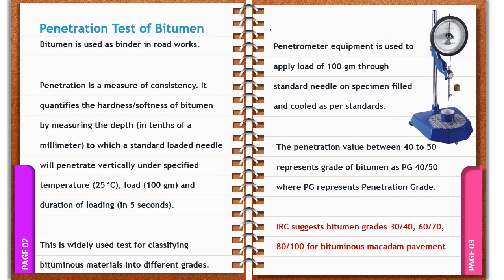Bitumen is used as a binder in road construction work, and penetration is the measure of consistency of bitumen. The penetration value quantifies the hardness or softness of bitumen by measuring the depth to which a standard loaded needle will penetrate vertically under a specified temperature, load, and duration of time.